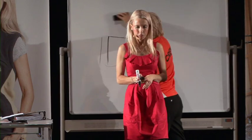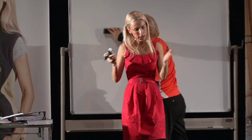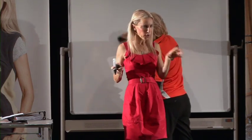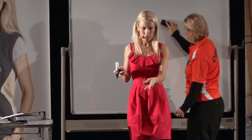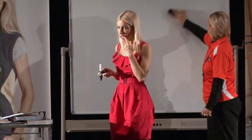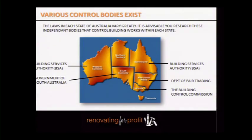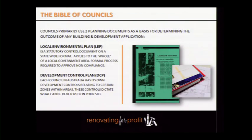In each state there are government bodies that regulate the planning process. In New South Wales it's the Department of Fair Trading, in Queensland it's the BSA (Building Services Authority), in Victoria it's the Victorian Building Control Commission, in South Australia it's the Government of South Australia, and in WA it's also the Building Services Authority. So if you get stuck, there is help at your disposal in each of those states.